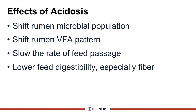So one of the questions might be: if the pH goes below 6, what does that acidosis have on the animals? It's huge. First, it shifts the rumen microbial population away from fiber-digesting bacteria. As a result, it changes the VFA pattern, decreasing acetate production and increasing propionate production. Thirdly, it slows down the rate of passage — a problem for high-producing cows — and finally it reduces feed digestibility, especially the fiber fraction, which of course is our forages.